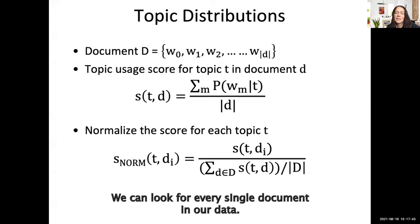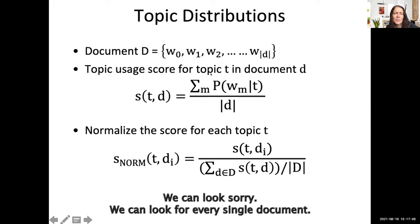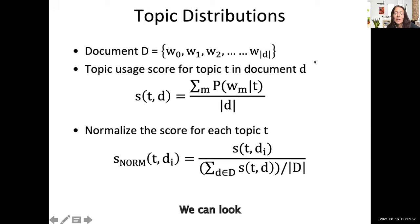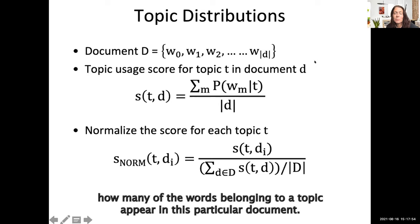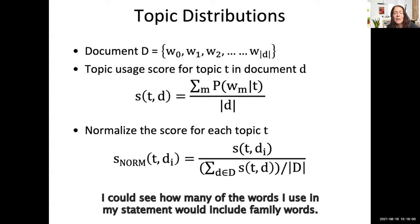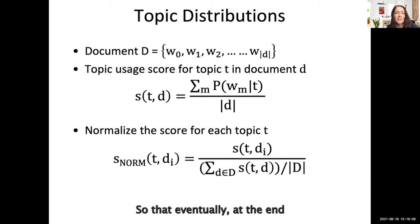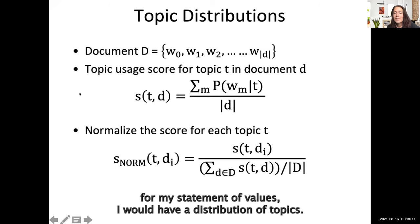We can look at every single document in our data and see how many of the words belonging to a topic appear in that particular document. For instance, if I make a statement about my own values, I could see how many of the words I use would include family words, and do the same for all other topics. Eventually, for my statement of values, I would have a distribution of topics.